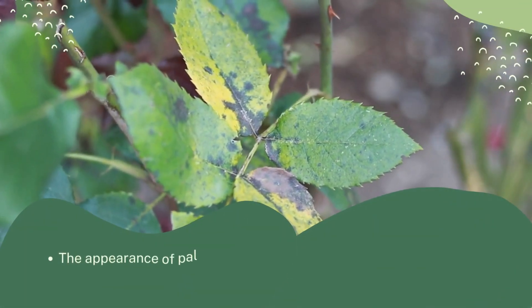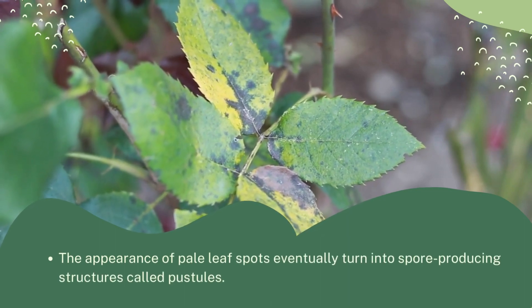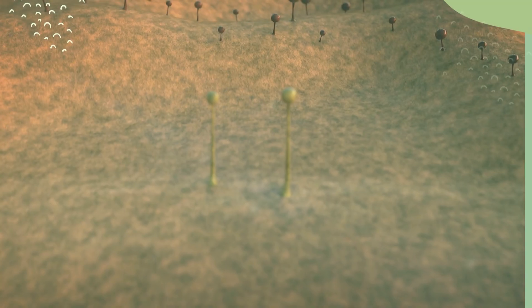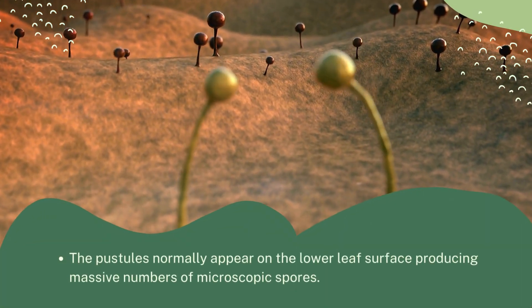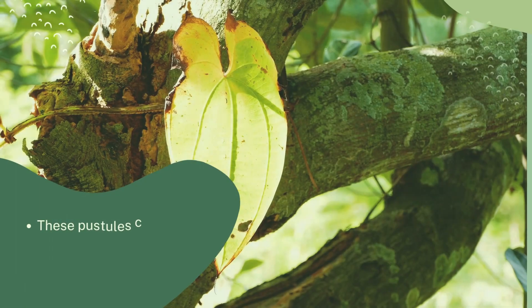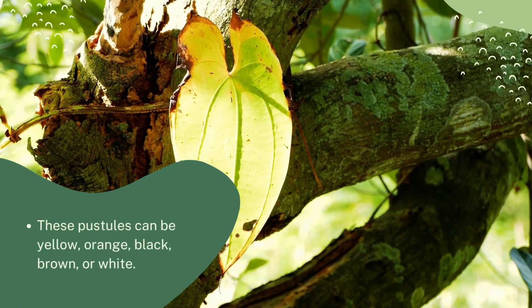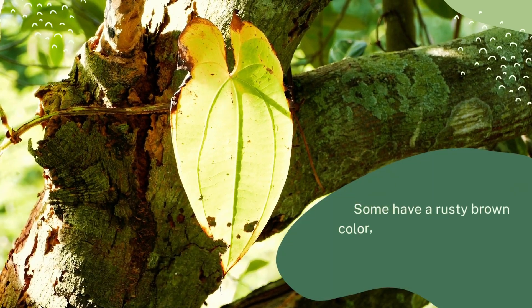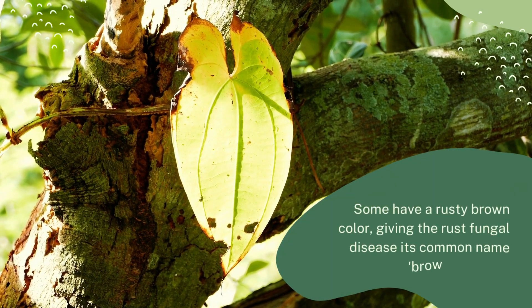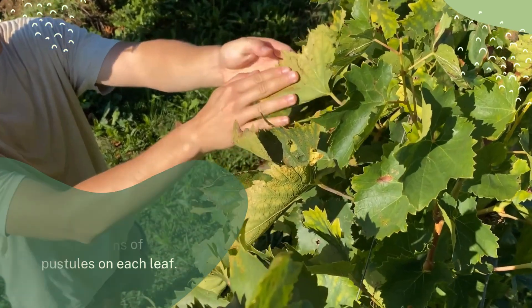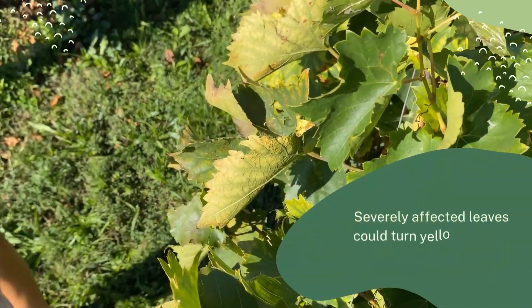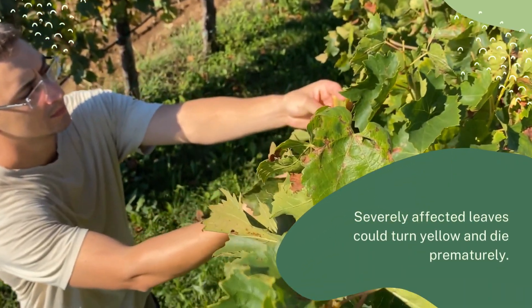Symptoms of Plant Rust: The appearance of pale leaf spots eventually turn into spore-producing structures called pustules. The pustules normally appear on the lower leaf surface, producing massive numbers of microscopic spores. These pustules can be yellow, orange, black, brown, or white. Some have a rusty brown color, giving the rust fungal disease its common name brown patches. In some cases, you will notice dozens of pustules on each leaf. Severely affected leaves could turn yellow and die prematurely.